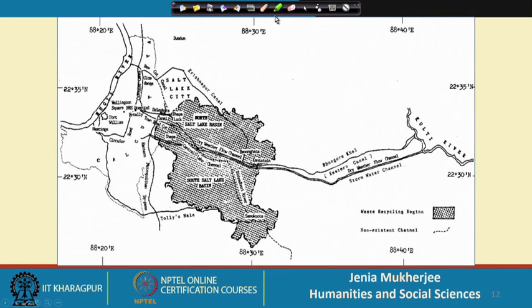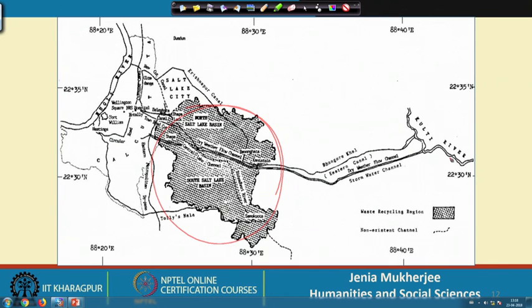The East Kolkata wetlands cover roughly an area of 20,000 hectares or more and are totally connected to the Kulti river on the east and the eastern canal system. The canals and wetlands are part of an integral system — one needs to understand this. We can never discuss the canals of Kolkata without discussing the wetlands, and vice versa, because the East Kolkata wetlands entirely depend on the supply of waste water from the canals.